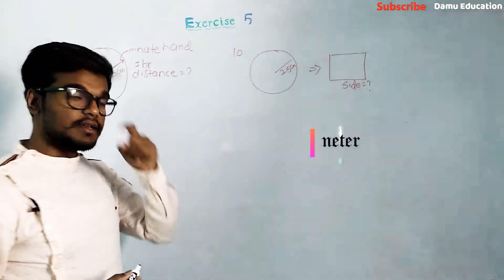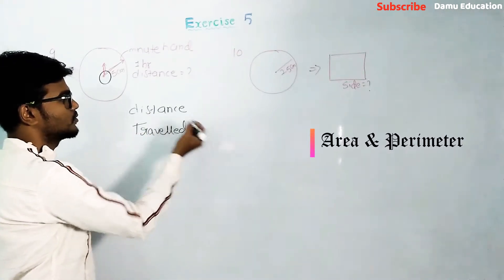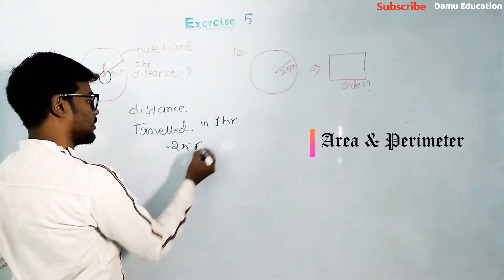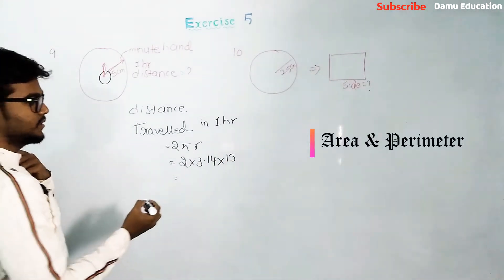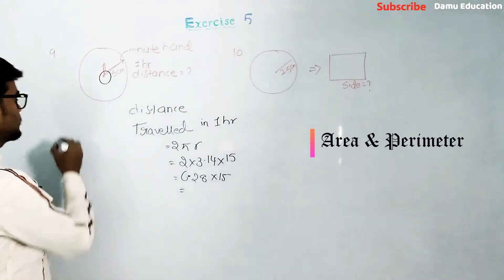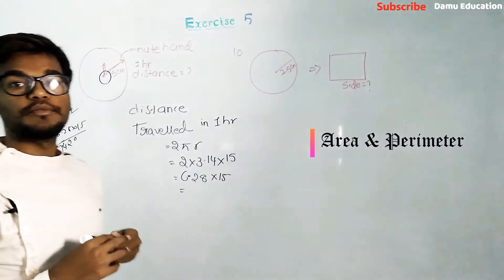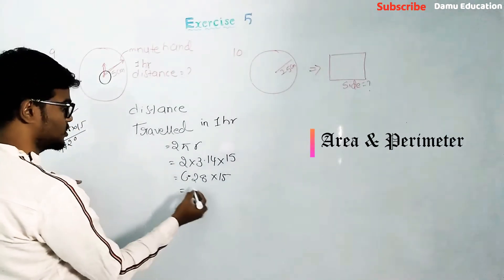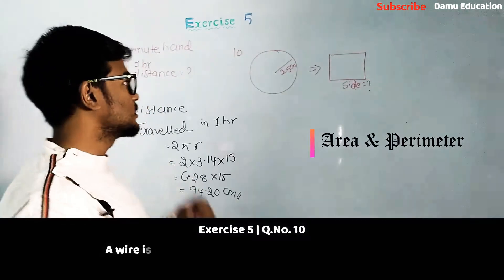The distance traveled by the minute hand in one hour is 2πr. So, 2 into pi (3.14) into r (15 centimeters) gives us 6.28 into 15, which is 94.20 centimeters. So the minute hand travels 94.20 centimeters in one hour.